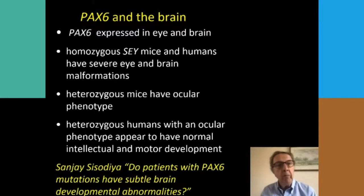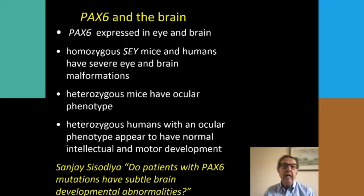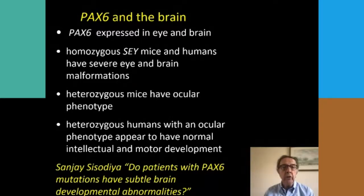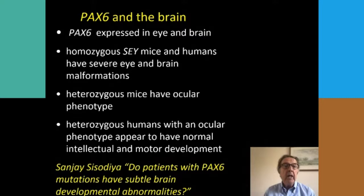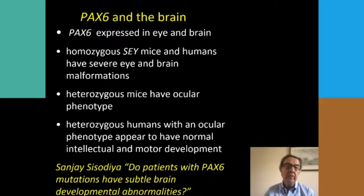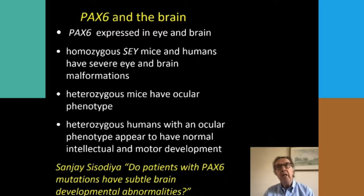We know from work subsequent to Veronica's discovery of the gene that it is expressed mainly in the eye and the brain, but also in the pancreas. The typical mouse model used has a mutation on one copy of the gene and the other copy is normal, just as in humans with aniridia. But if you delete both copies of the gene in mice, there are severe eye and brain abnormalities. There have been a very few recorded instances where two patients with aniridia have had children together, and when the affected infant has both faulty copies of the gene, they also have severe eye and brain abnormalities.